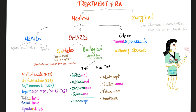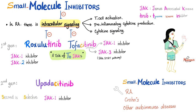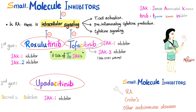We talked about tofacitinib in a previous video. Today we'll talk about ruxolitinib and the brand new one, upadacitinib. Whether you're talking about ruxolitinib, tofacitinib, or upadacitinib, they all end in '-tinib'.